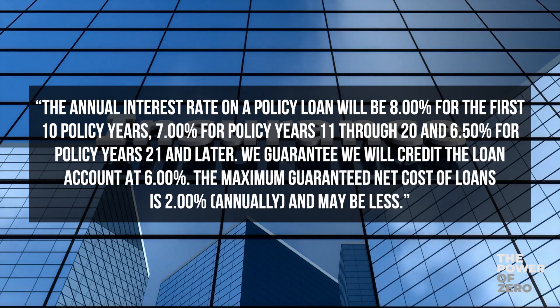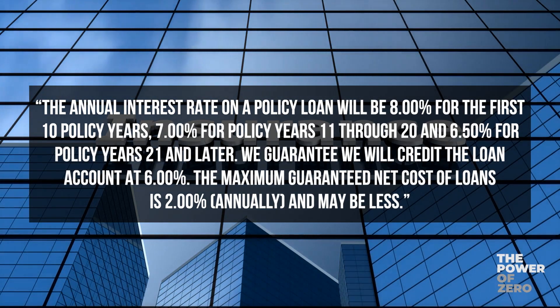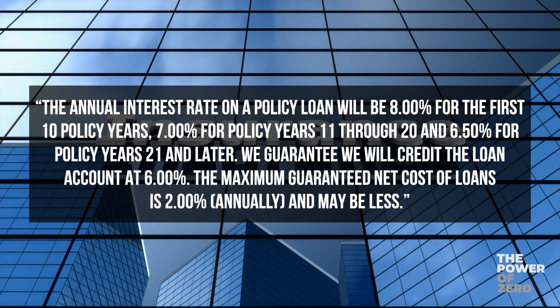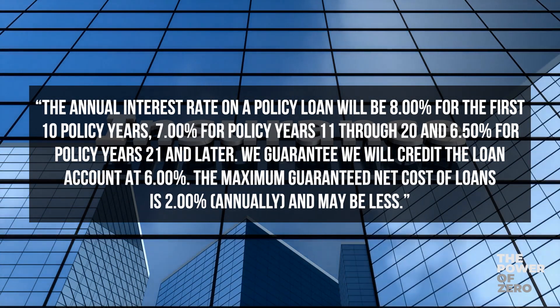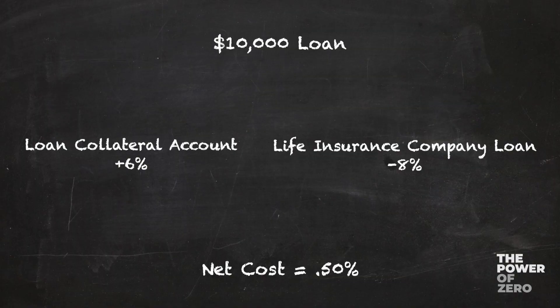Contrast that with the following example of a non-zero-cost loan: "The annual interest rate on a policy loan will be 8% for the first 10 policy years, 7% for policy years 11 through 20, and 6.5% for policy years 21 and later. We guarantee we will credit the loan account at 6%. The maximum guaranteed net cost of loans is 2% annually and may be less." At first glance, it appears that the loan charge over the first 20 years will drop from 8% to 7%, and then ultimately to 6.5%. It also appears that the company guarantees they'll credit the loan collateral account at 6%. So on the surface, the worst-case scenario appears to be a net half-percent loan cost after the 20th year — that's a 6.5% loan charge minus a 6% loan credit.